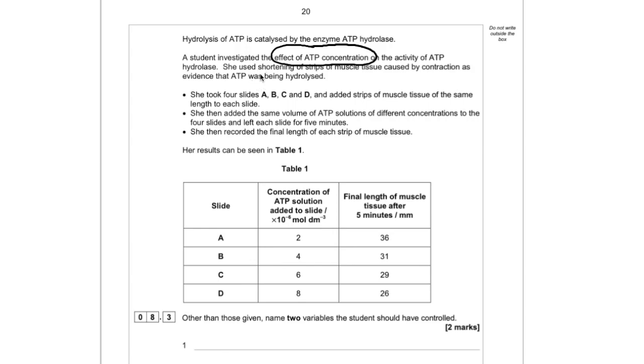So we've got four slides and we've added strips of muscle tissue of the same length to each slide. So we're taking it that our muscle tissue have got our ATP hydrolase on it. We're then adding the same volume of ATP solutions of different concentrations. So it's different concentrations to test the effect of ATP concentration to these slides. And we're leaving them for five minutes.